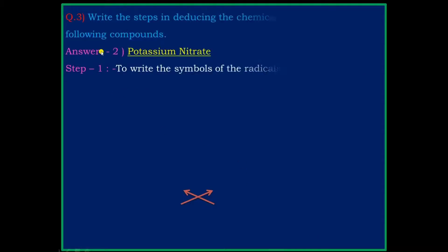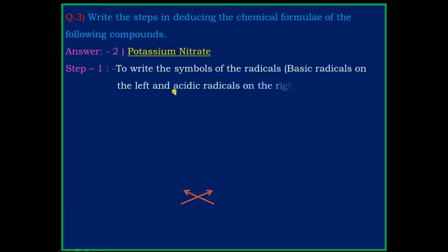Question 2: Potassium Nitrate. Step 1: write the symbol of the radical — basic radical on the left side and the acidic radical on the right side. Potassium is on the left side and nitrate is on the right side.